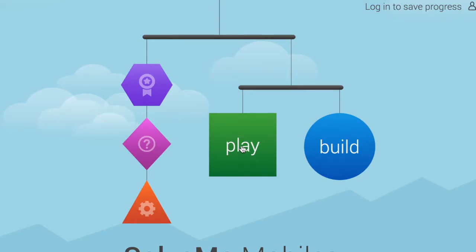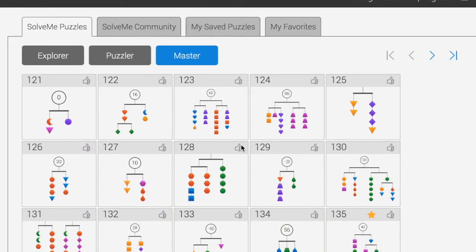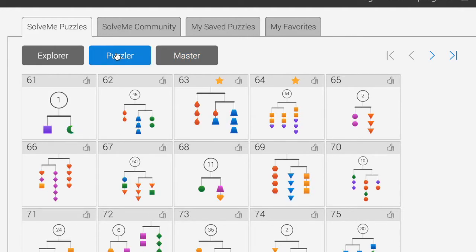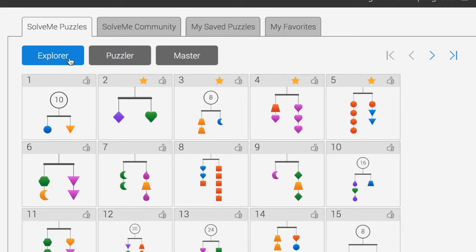Just in case you can't figure out how this works, Slappy Mobiles has three levels. Master will be the most difficult, Puzzler will be the medium level, and Explorer will be the simplest level.